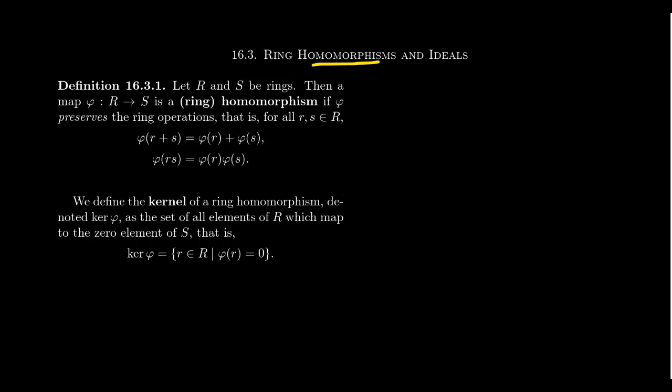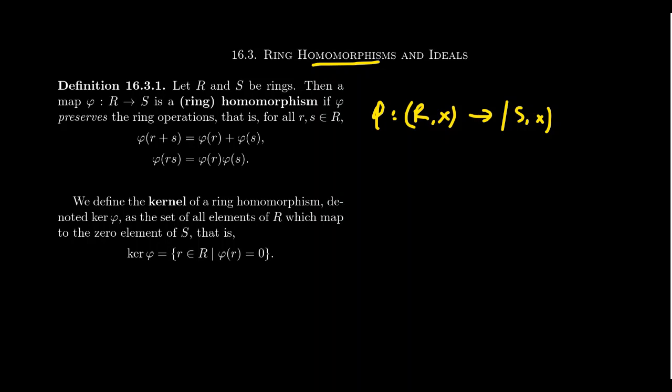But rings have more than just their additive group structure — they also have multiplication. The second binary operation we want also to be preserved. So just like with groups, if we take a product of two elements in R, again called little r and little s, we want that phi of r times s is the same thing as phi of r times phi of s. If we restrict just to the multiplication, we want the ring homomorphism to be a homomorphism of the semi-group structure. Because with a ring, the multiplication doesn't necessarily have all of the same axioms that the addition does.